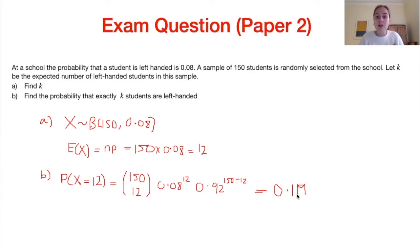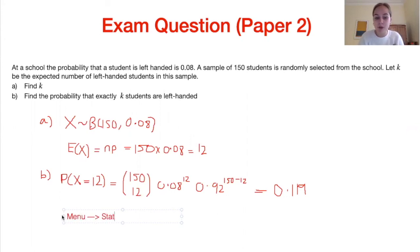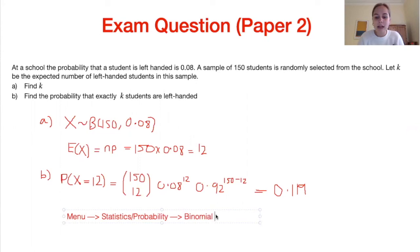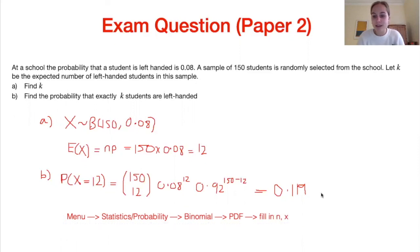We could use the formula, but an important trick is that you can also work this out using your GDC. On most GDCs, go to menu, then statistics or probability, then binomial. You'll be asked for PDF or CDF — when finding the probability of one specific outcome, use the PDF (probability density function). Fill in the number of trials N and the number of successes X to get the answer.